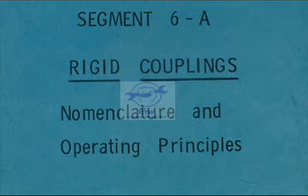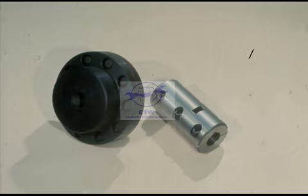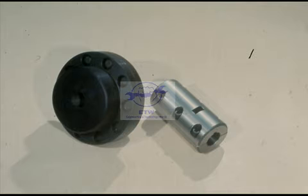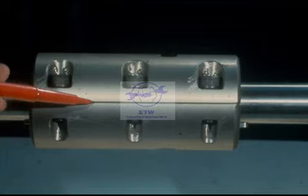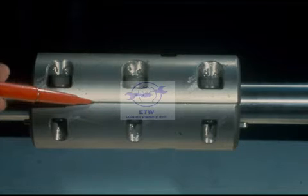This segment of our course deals with rigid couplings. We'll explain how each of the couplings works and show you each of the parts and familiarize you with the nomenclature. We will deal only with two basic types of rigid couplings, the sleeve and the flange. First, let's look at the split sleeve. As you can see, it is made up of two halves which are bolted around the shafts to be connected.